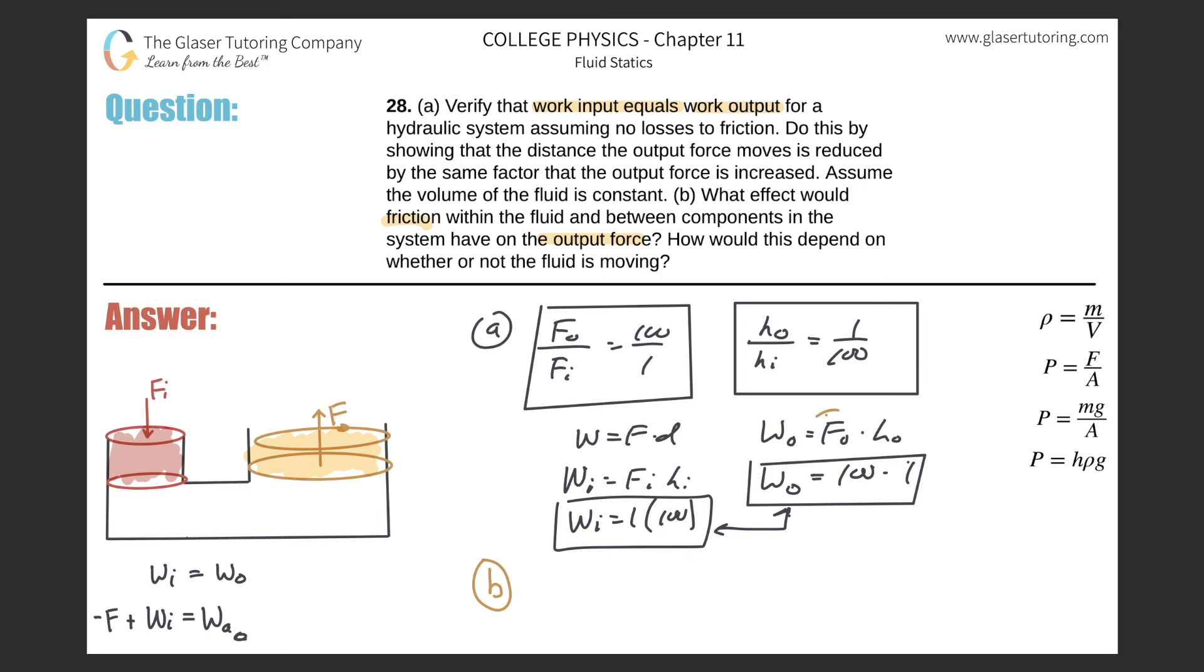We realize that the output work should then be less than the input work. Which of these two variables will be altered? Is it going to be the height that's outputted or the force? Remember, the fluid is not compressible. Therefore, the height will have to be the same, but the amount of force will be less. For this specific example, the output force would now have to be less than 100. The volume is incompressible, so whatever volume was in red is also translated into yellow.